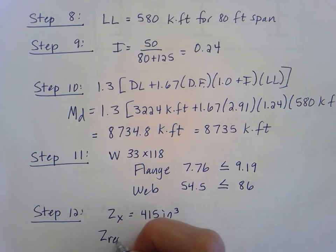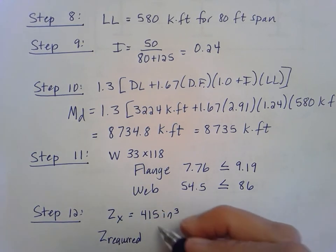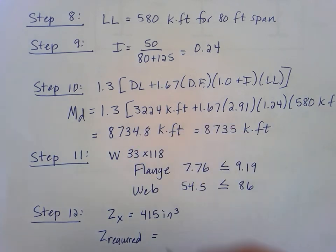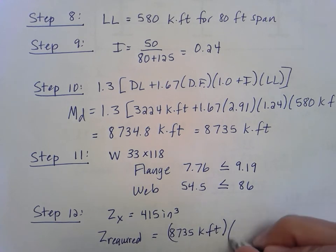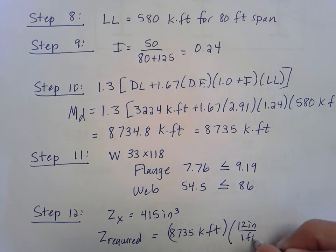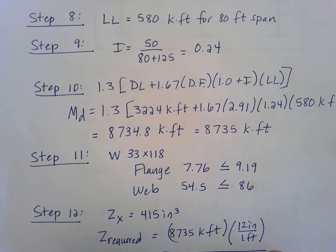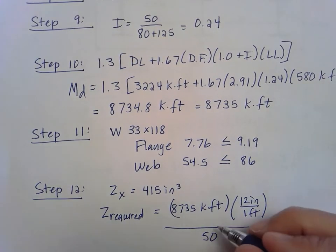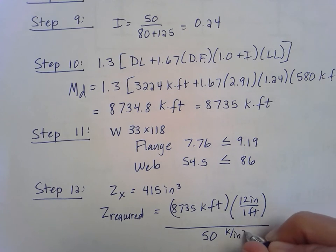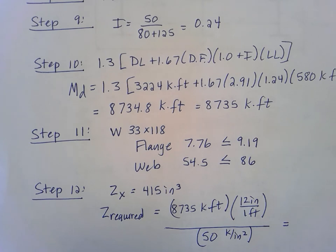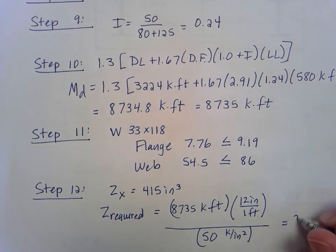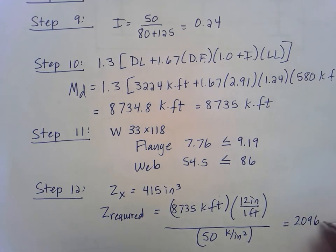Let's check it out and see if that will work. This is going to be our Z required. We're going to take that factored design moment that we calculated, 8735 kip feet, convert that to kip inches, so 12 inches per one foot, and then divide that by the 50 kips per inches squared. We plug that all into the calculator, come up with a whole number: I get 2096, and that is inches cubed.